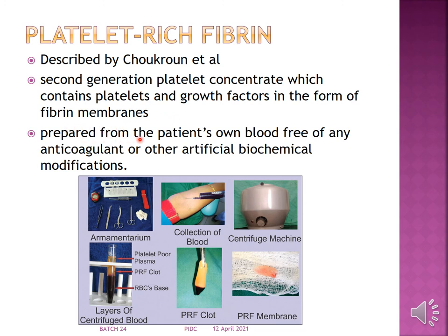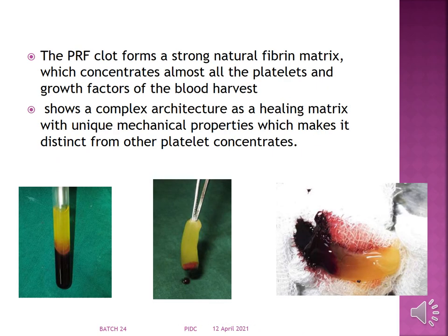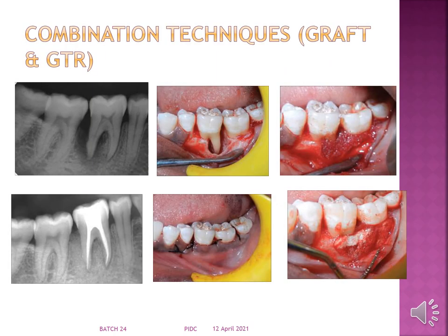PRF is prepared from the patient's own blood, free of any anticoagulant or other biochemical combinations. The PRF clot forms a strong natural fibrin matrix which concentrates almost all the platelets and growth factors of the harvested blood. It shows a complex architecture as a healing matrix with unique mechanical properties, making it distinct from other platelet concentrates.